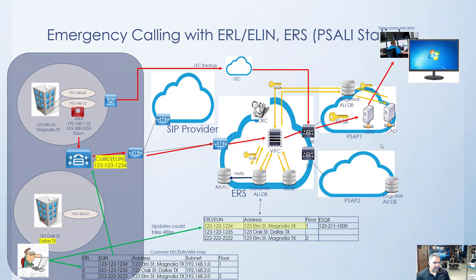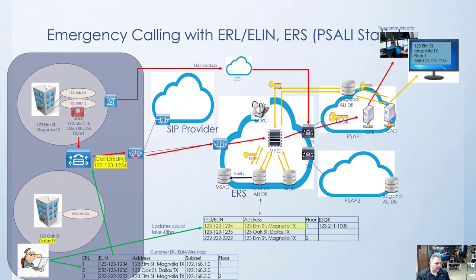That's how the magic happens — the address goes from the ERS's dynamic ALI database back through the regional database to the CAD system and pops up on screen. For callback, the PSAP dials the ANI number across the PSTN, it reaches the SIP provider, comes into the SBC, reaches the call controller, which recognizes Jack called 911 and that his caller ID was replaced with that ELIN — so it knows to ring Jack's phone.